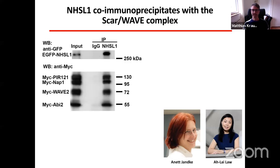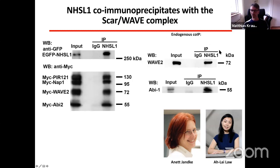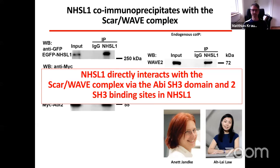This prompted us to test whether NHS-like 1 interacts with the SCAR/WAVE complex. We co-transfected GFP-tagged NHS-like 1 with the entire myc-tagged SCAR/WAVE complex and, after immunoprecipitation of NHS-like 1, observed co-precipitation with the SCAR/WAVE complex. We also observed endogenous co-immunoprecipitation between NHS-like 1 and WAVE2 and Abi, suggesting that indeed in cells NHS-like 1 can interact with the SCAR/WAVE complex. We did a detailed biochemical analysis and found that NHS-like 1 directly interacts with the SCAR/WAVE complex via the AbSH3 domain and two SH3 binding sites in NHS-like 1.